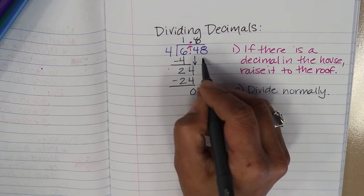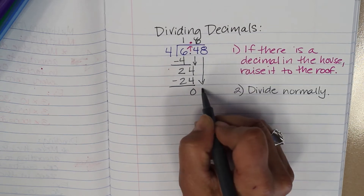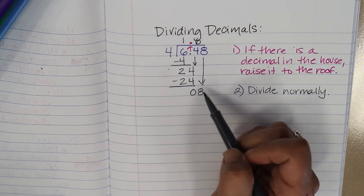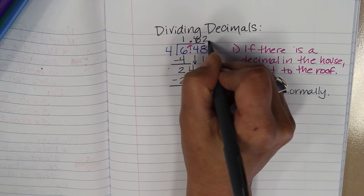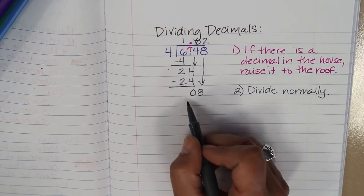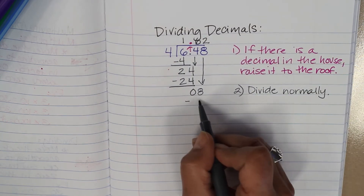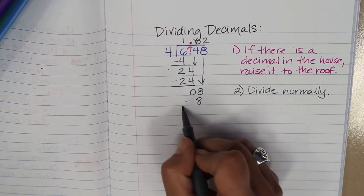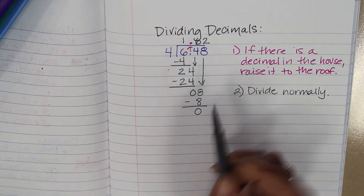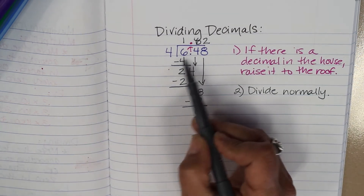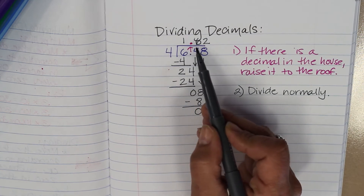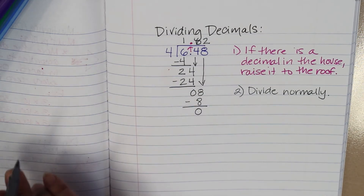0. And now I bring down my 8. Then 4 goes into 8, 2 times. I will do 2 times 4, like we saw in our video yesterday, and subtract that. So my answer to 6 and 48 hundredths divided by 4 is 1 and 62 hundredths.